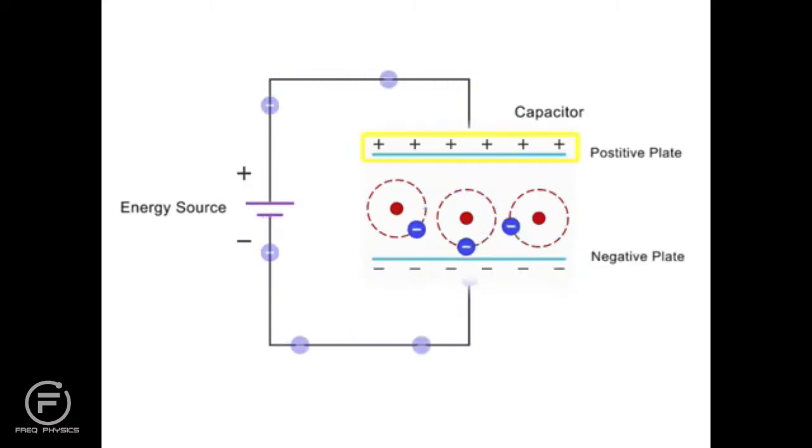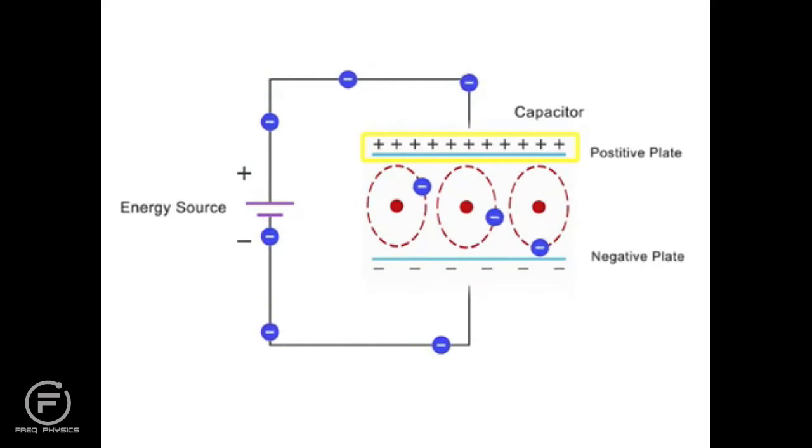As charge accumulates on the positive plate, the electrons of the dielectric material gravitate toward the positive plate, distorting their orbits. The attraction of the nucleus to the negatively charged plate further stretches the atoms.